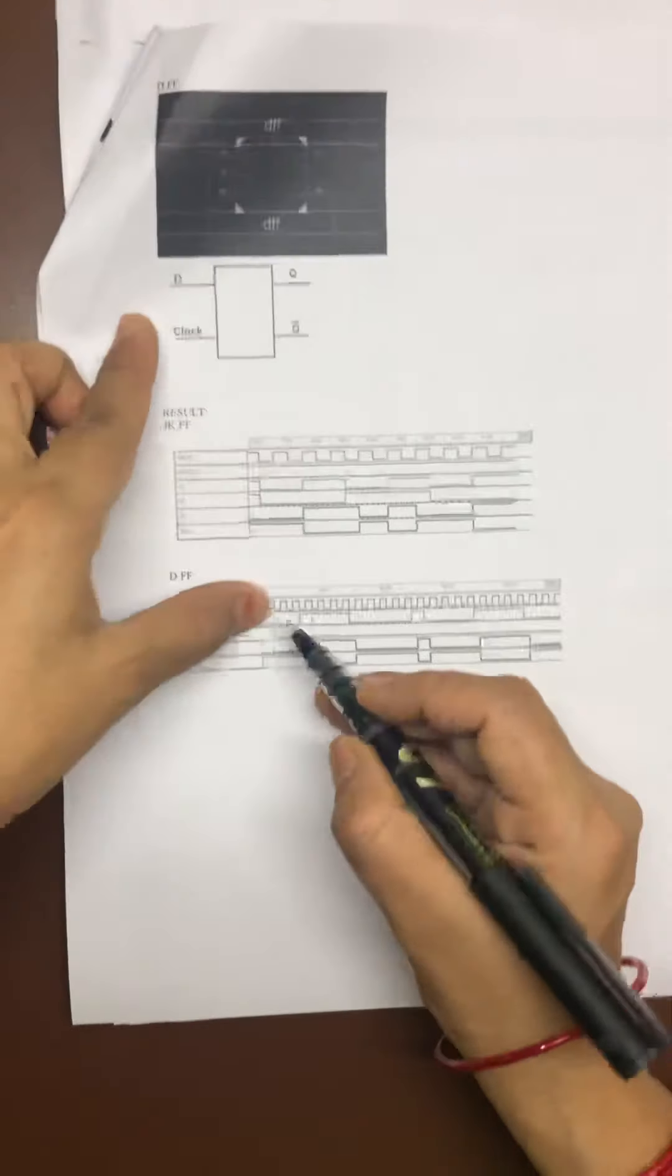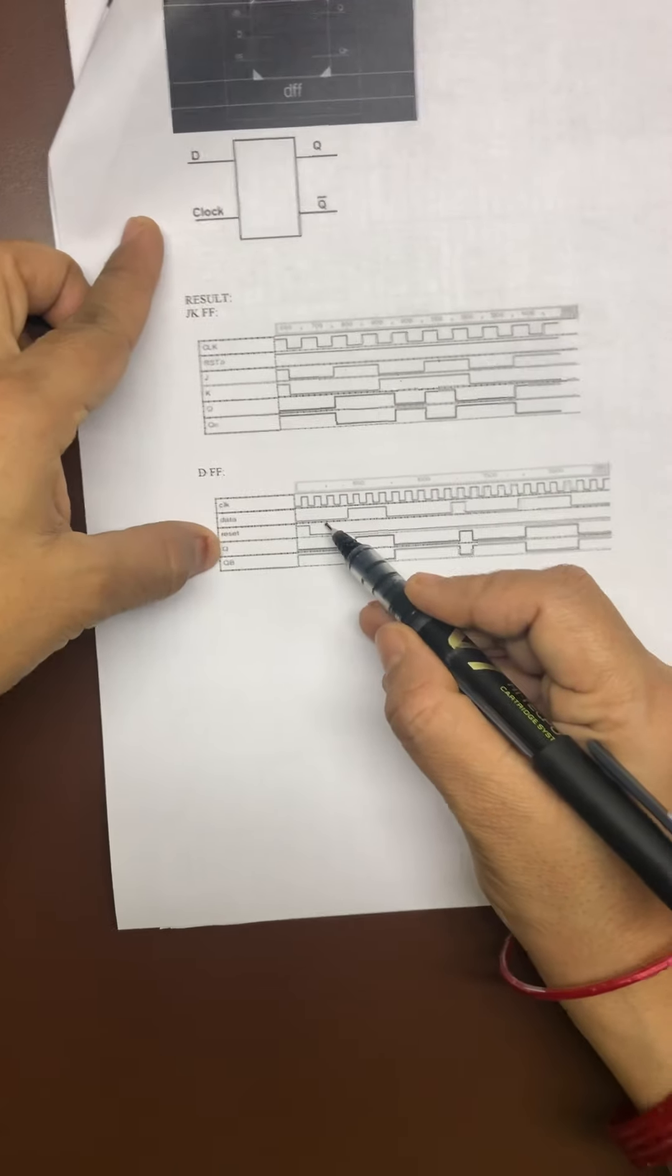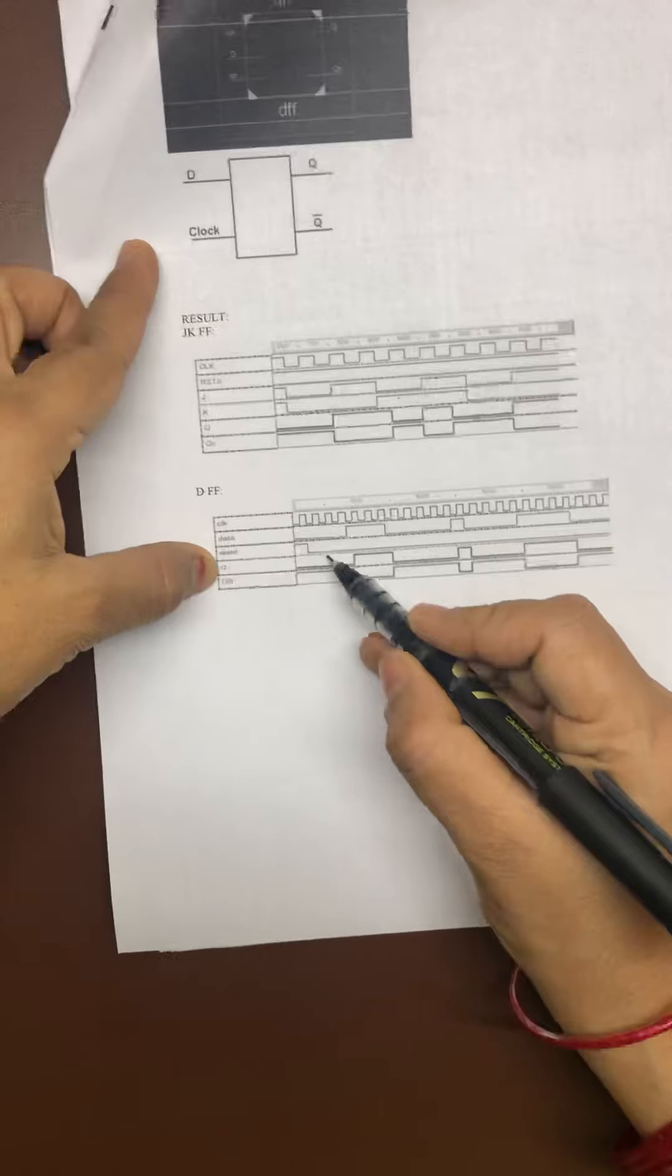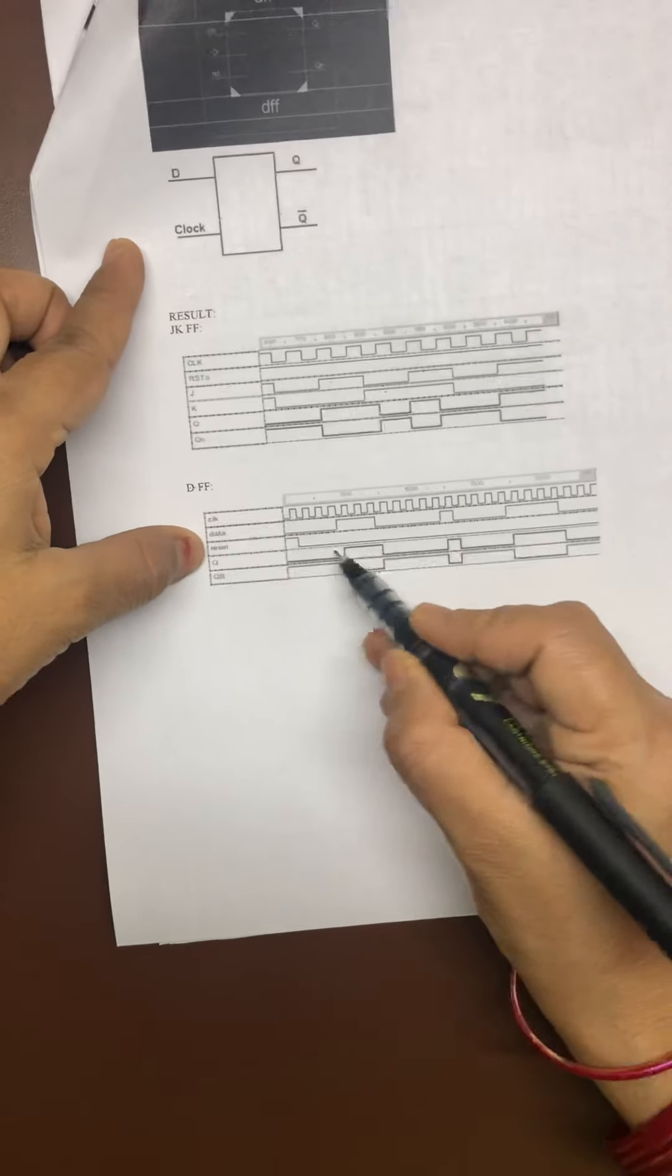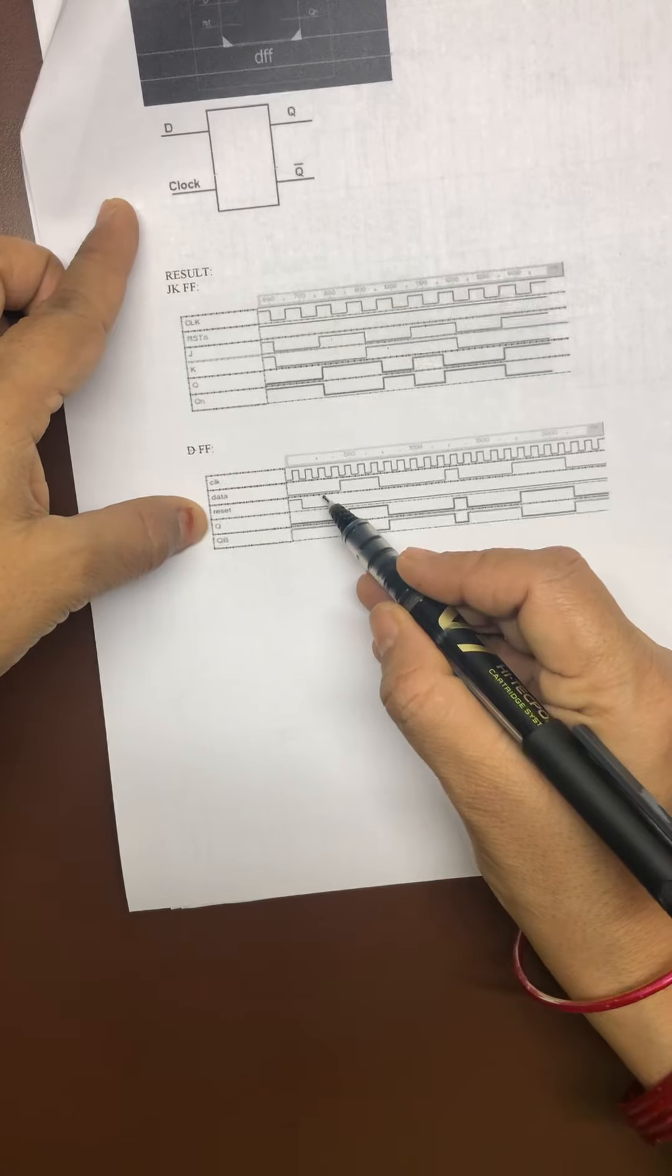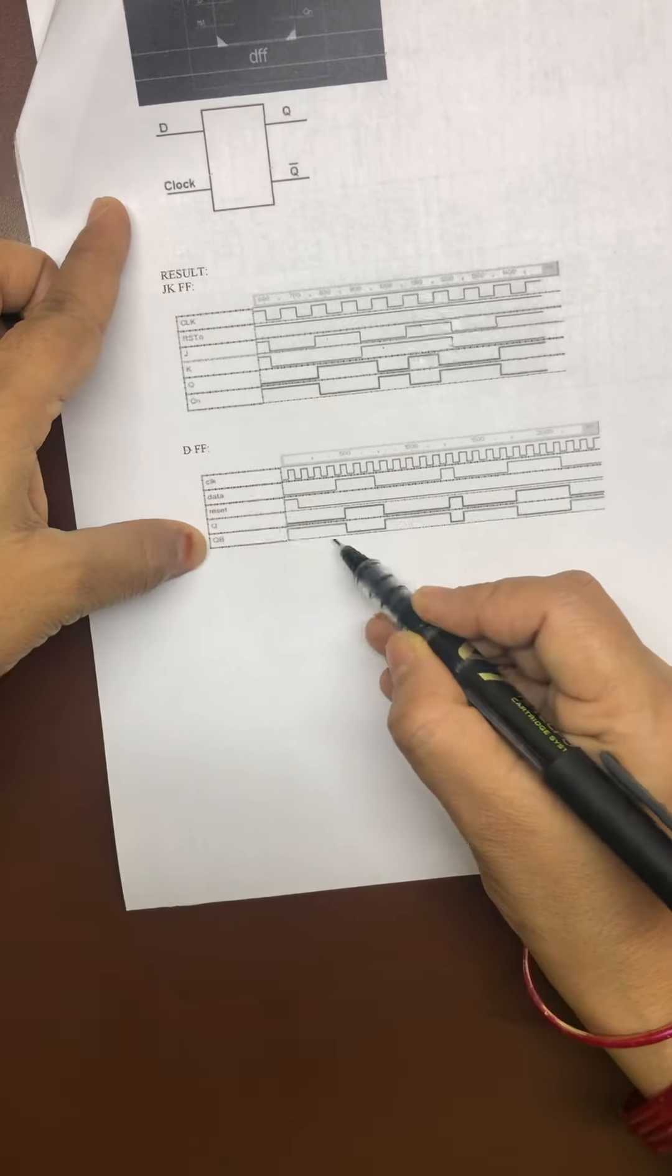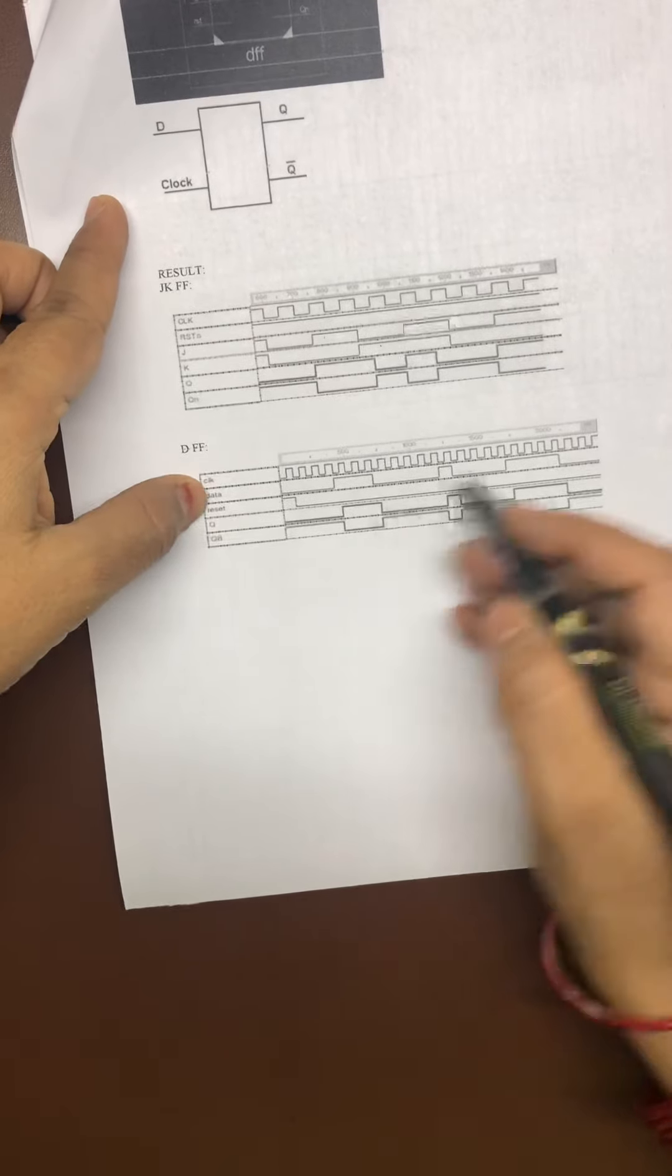Now cross check your waveform. Whenever clock is going to be 1, see, this is my data D. Or your reset is 0. Whenever my reset is 0, see output. 0, 0. 1, 1. And Q bar is just invert of Q. That is the thing which you need to be prepared. Thank you.